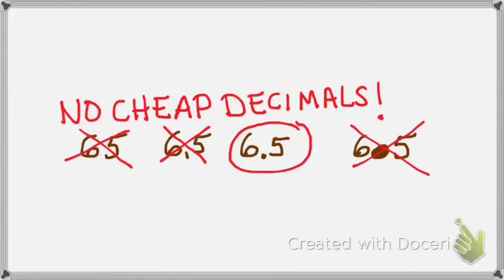An important note to remember: when writing decimals, we can have no cheap decimals. Decimals need to look like decimals. In the first example, you can barely see the decimal point — the teacher needs to be able to see it, so no cheap decimals. In the next example, I can see something but I can't tell if it's a decimal or a comma, and if I'm not sure, I have to mark it wrong. In the third example, that certainly looks like a decimal — I can definitely tell it's six and five tenths without a magnifying glass. That's good. So no cheap decimals.